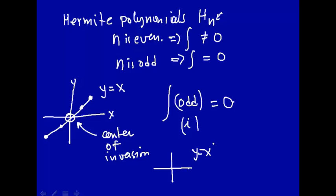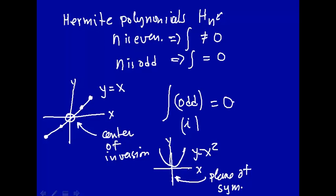Now consider an even function: y equals x squared. This is what y = x² looks like. Here there is a plane of symmetry coming out toward you. If we reflect one side of the function across this plane into the other side, we get the same function back. So there's an example of symmetry applied to these functions — y = x is odd with a center of inversion, and y = x² is even with a plane of symmetry.